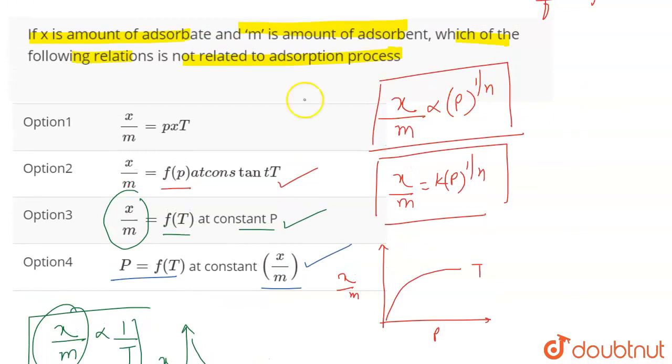You have to tell which is not related to the process. So option number one is not related to the process. So actually, this is the correct answer. It is very clearly visible. There's no expression such that X/M is equal to P×T. There's no such relationship. This is the relationship that we have between X/M and P, which is given by the Freundlich adsorption isotherm. So there's no relationship like this. Therefore, this is the correct answer for the question.